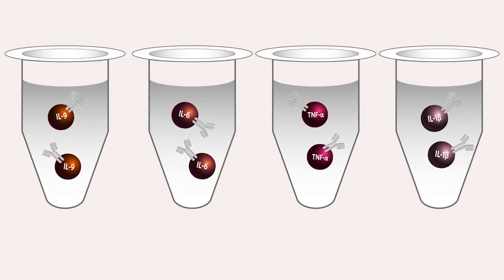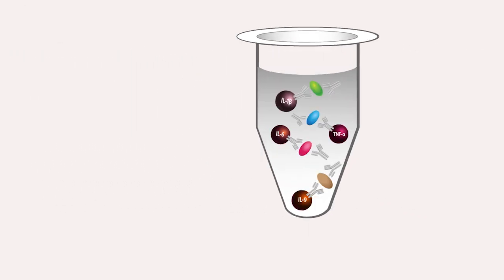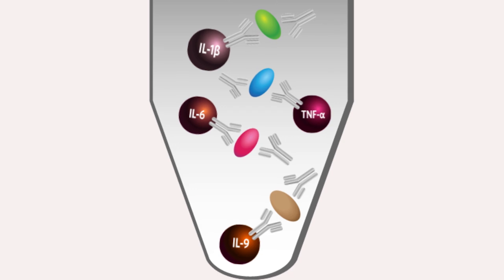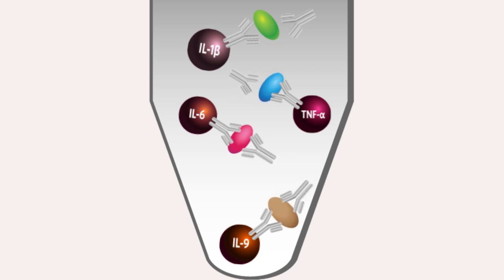We will demonstrate the process with an antibody sandwich immunoassay. Bead sets are combined into a single well to measure multiple analytes from one sample. Analytes are captured by antibodies coupled to the bead. Then, a detection antibody binds to the antigen forming a sandwich. And finally, a reporter molecule with a different fluorescent dye is added.